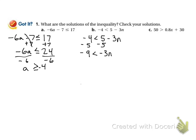I need to get rid of that negative 3. Right now there's multiplication going on, so to get rid of it I need to divide — I'll divide by negative 3. When I divide by a negative number, I flip the sign. Negative 9 divided by negative 3: a negative divided by a negative is a positive, so this is just 3. My negatives cancel off, my 3s cancel off, and this is just n.